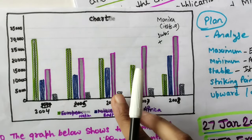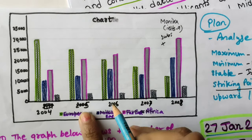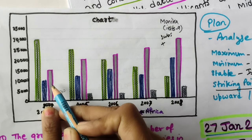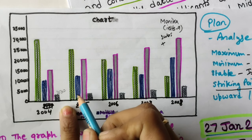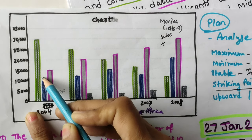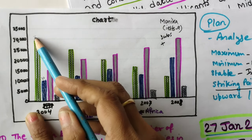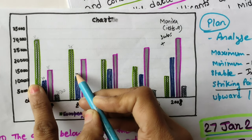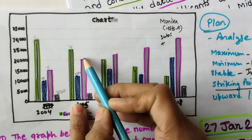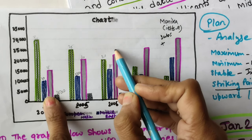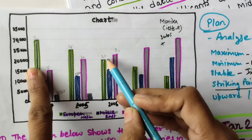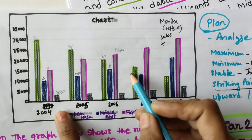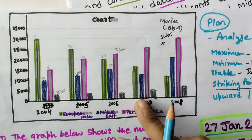Before writing detailed paragraphs, find the approximate figures from the graph. For 2004: European nations approximately 30,000; Far East approximately 15,000; Middle East approximately 10,000; African students approximately 2,500. For middle years: figures around 25,000 and 20,000 for European; Middle East and Far East around 12,500 to 13,000. The last year Far East approximately 23,000. This homework should be done before writing detailed paragraphs.